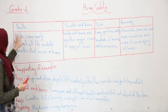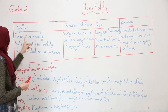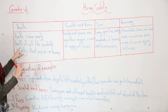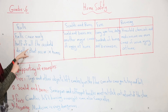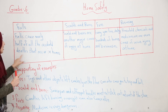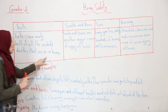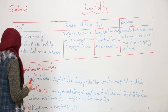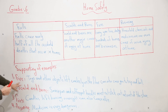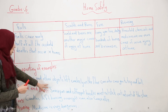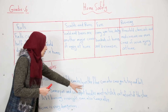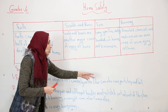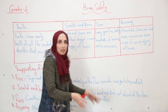Now we will talk about the falls. Falls cause nearly half of all the accidental deaths that occur in the home. For example, toys and other objects left carelessly on the floor can also cause you to trip and fall.